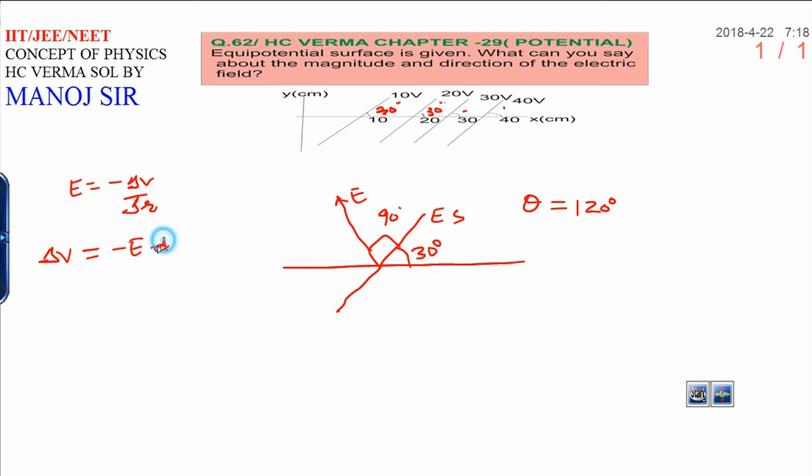Now potential can be written as minus E dot delta R. And when you remove the symbol, delta V equals E dot R cos theta. Now delta V is given, that is 10 volts.